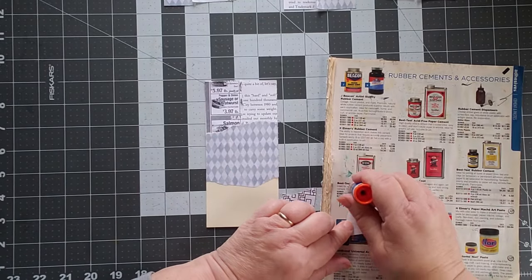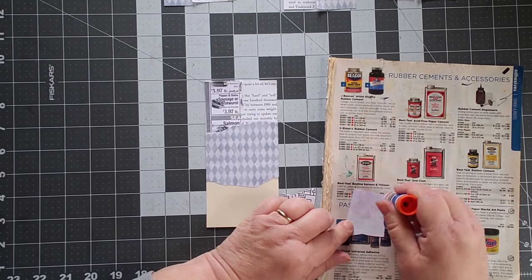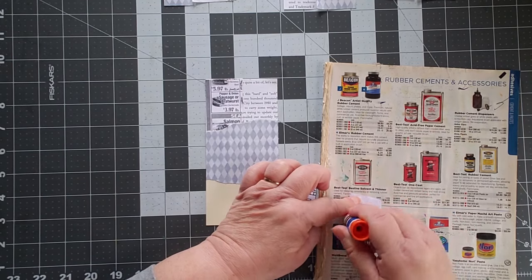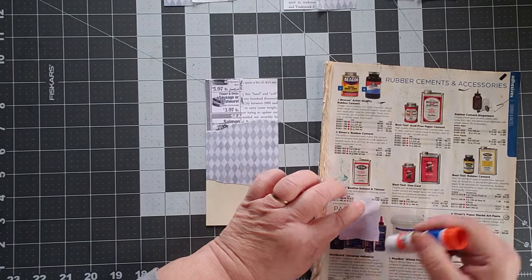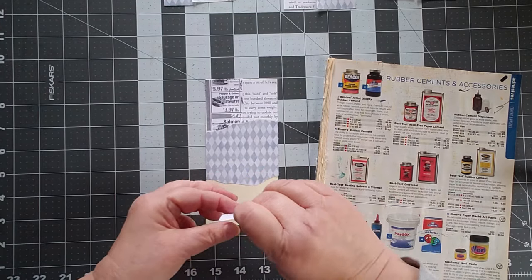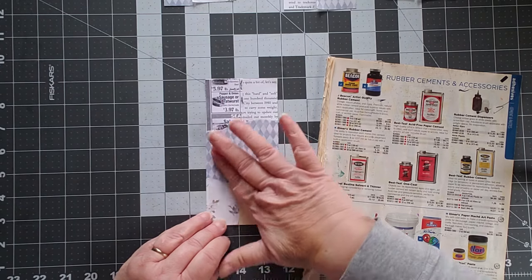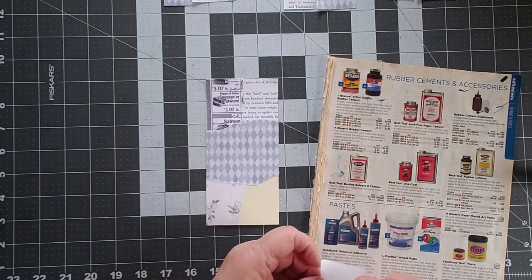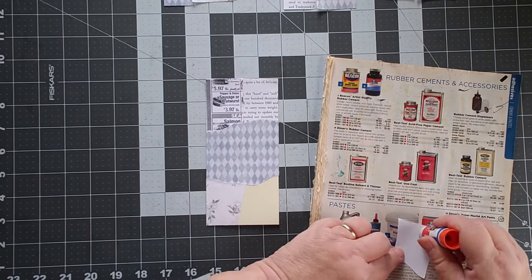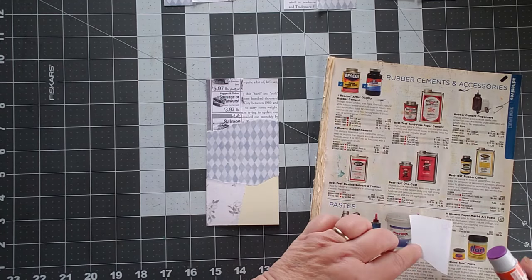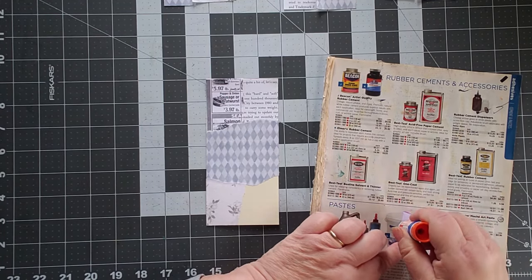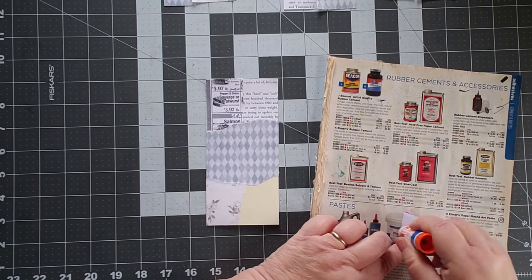Now you can use a bone folder to push these down if you'd like. Or a card, a store card, or a hotel card, or old credit card, whatever, plastic card that you have. Okay. Hang on. I'm going to take this one all the way through to completion, and then I will do the other five.